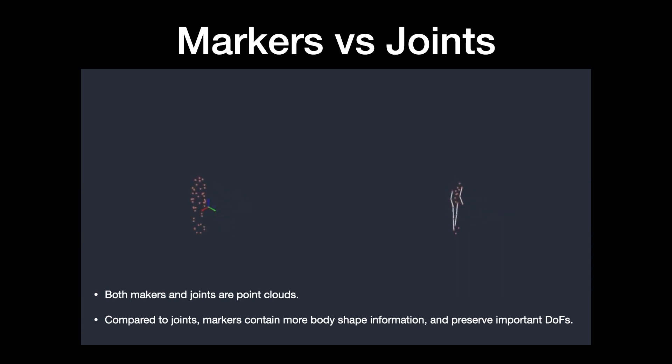Compared to joints, markers contain richer information of the body shape and preserve important degrees of freedom, such as rotations of the neck, the forearm, and the feet.